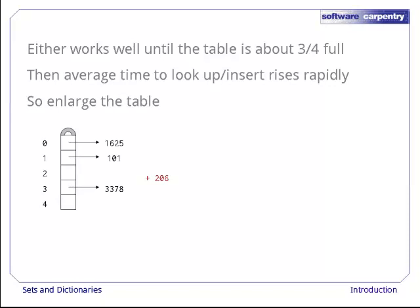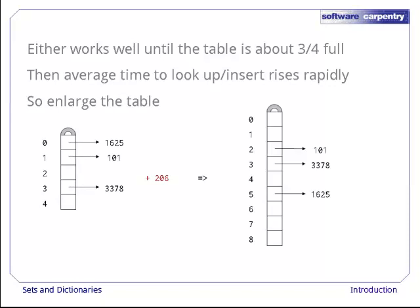When this happens, we can get the time back down to a constant, or close to a constant, by enlarging the table. For example, here's our size 5 table with 3 values in it. Adding another element would take us over the magic 3 quarters threshold. So instead, we'll resize the hash table so that it has 9 slots, and then insert 206. In essence, we're spending memory to save time, a tradeoff that comes up again and again in program design.